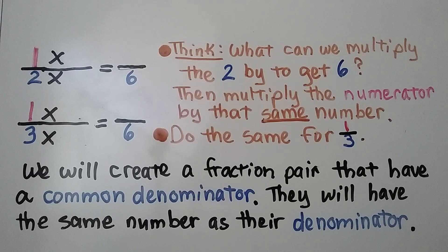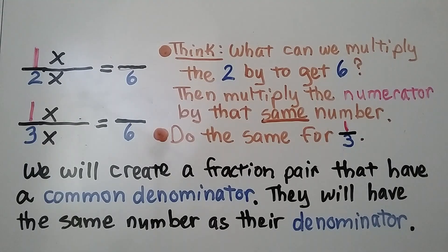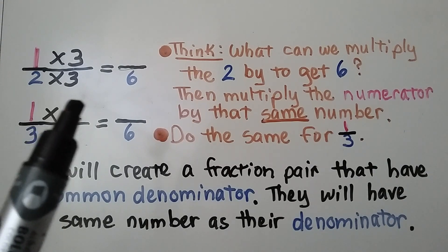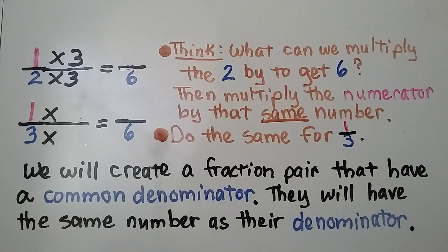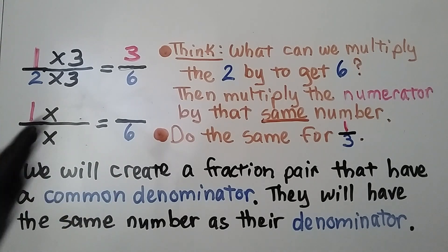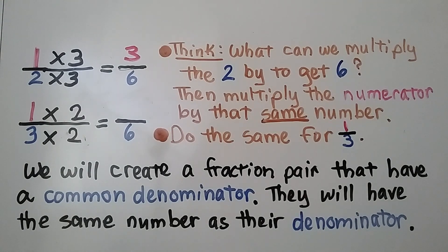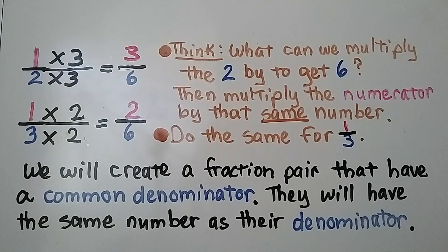We think: what can we multiply this two by to get six? Two times three equals six. Then we multiply the numerator by that same number to get the new numerator. One times three is equal to three. We do the same thing for one-third. We ask ourselves: three times some number is equal to six — that would be two. So we multiply the numerator by two also. One times two gives us two for the new numerator. We create a fraction pair that has a common denominator — they will have the same number as their denominator.